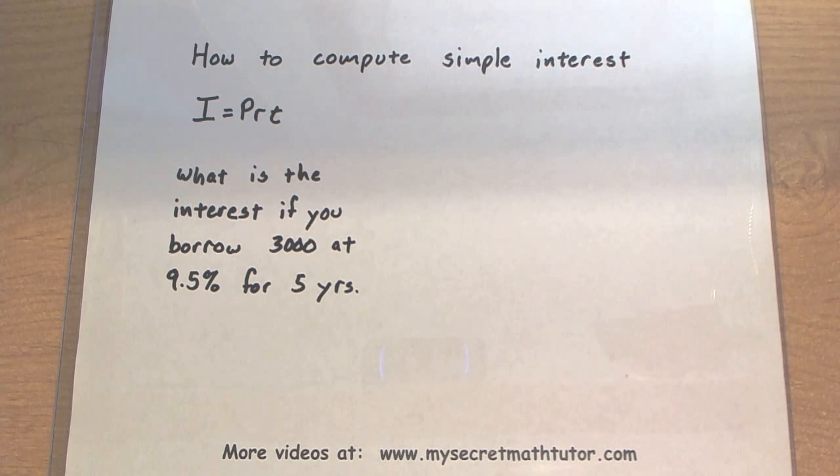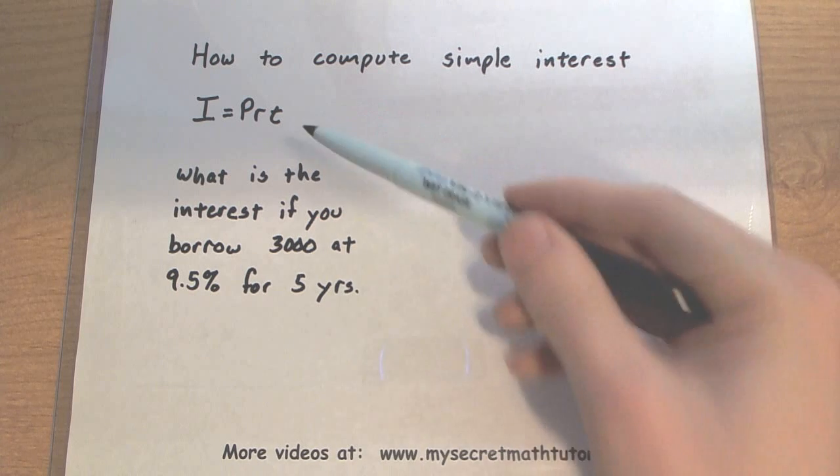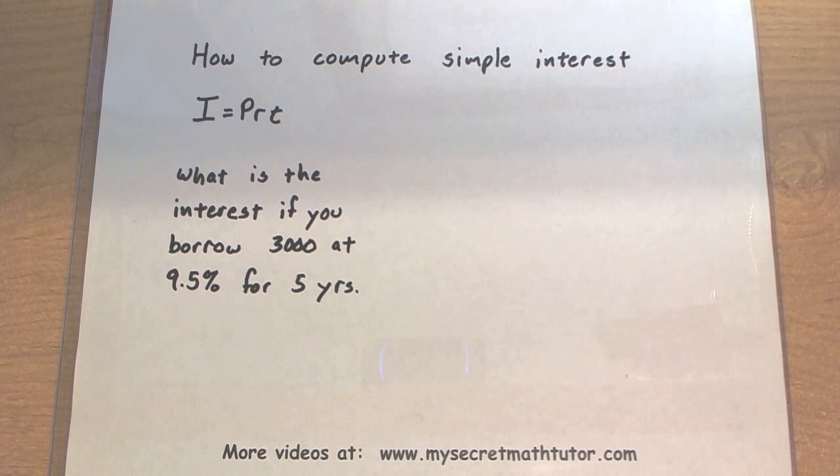Now when it says principal, that's usually the starting amount. R is the rate at which you're borrowing and T is the number of years. So in my example, I want to know what is the interest if you borrow $3,000 at 9.5% for 5 years.